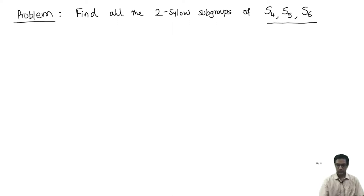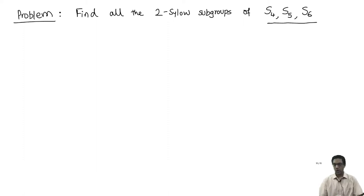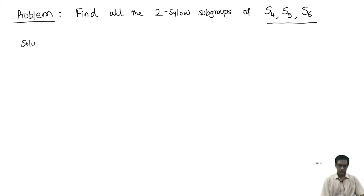In each case, I want you to find what all the 2-Sylow subgroups look like explicitly in terms of permutations. Please do try this on your own. Let me work out the solution for you.